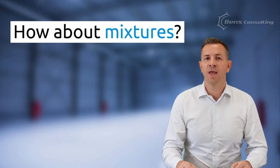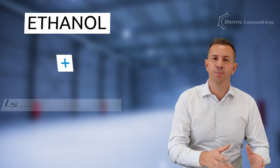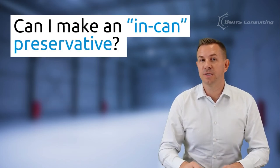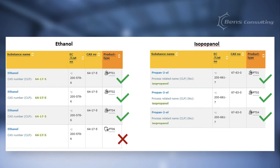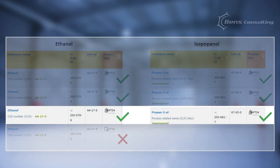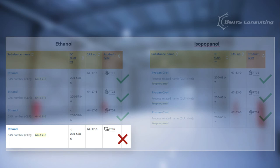How about mixtures? For example, if I mix ethanol and isopropanol, what can I claim on the label? Can I make an in-can preservative with two active substances — ethanol and isopropanol? Well, since isopropanol is not approved for in-can preservatives, such claims on the label would be false. In the case of a mixture, when you have two or more active ingredients, the biocidal product can only be intended for product types that overlap. In our example, a mixture of isopropanol and ethanol can only be intended for human hygiene, surface disinfectants, and food and feed area disinfectants. It cannot be intended for preservation of products during storage.